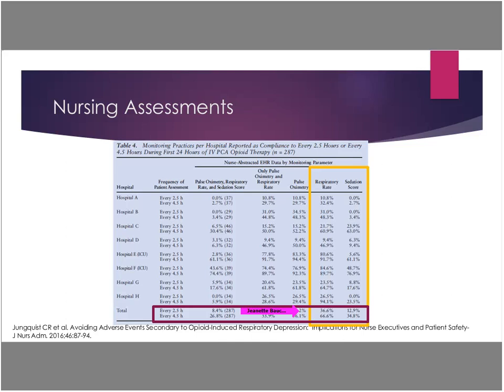Depending on nursing staff ratios — looking at hospital E and F where they were actually looking at ICUs — compliance is much higher. Nurses are one of our most valuable and most expensive resources in the hospital. You can improve monitoring with higher ratios such as one-to-one in an ICU, but on the surgical floors it's not ideal. It's a big burden for the nurse to go in every two and a half hours when they're busy with other patients.